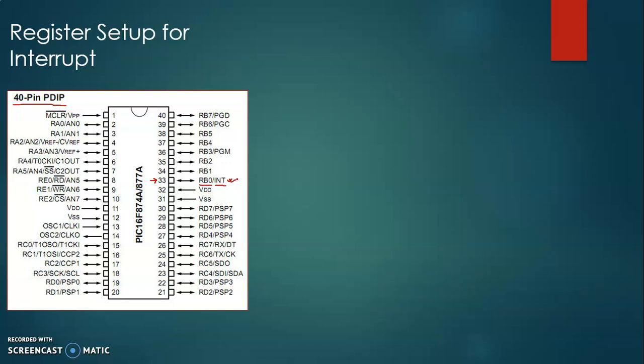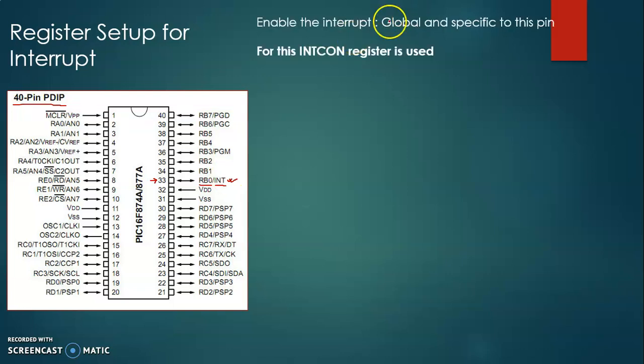From our previous discussion we already know that to enable or disable the interrupt you need to do it from both levels — the global level and the individual level. To enable or disable the interrupt you have to use a few registers. For this PIC16F8778 microcontroller the first register is INTCON. You have to use the INTCON register to set the global and individual bits for enabling the interrupt.